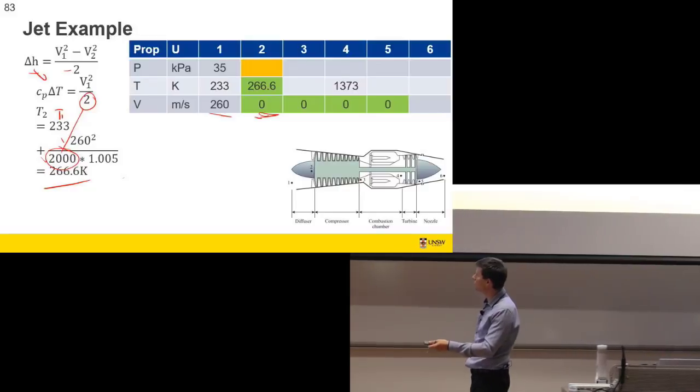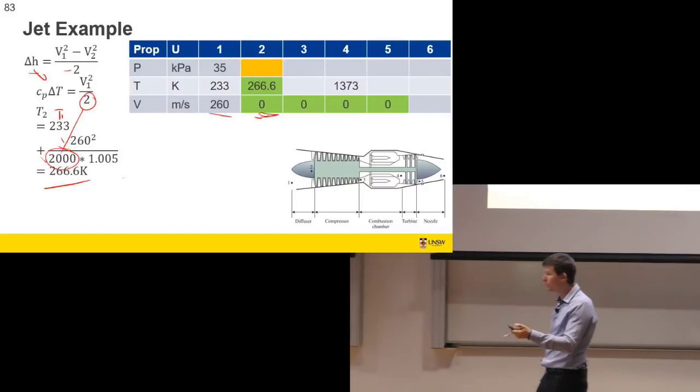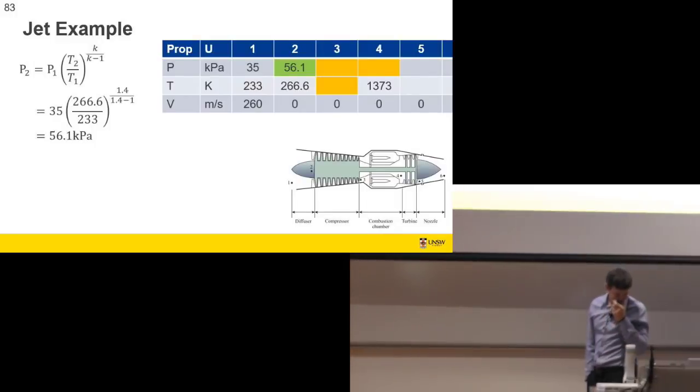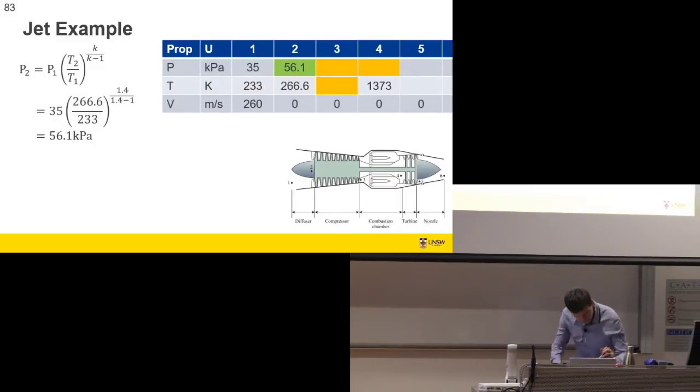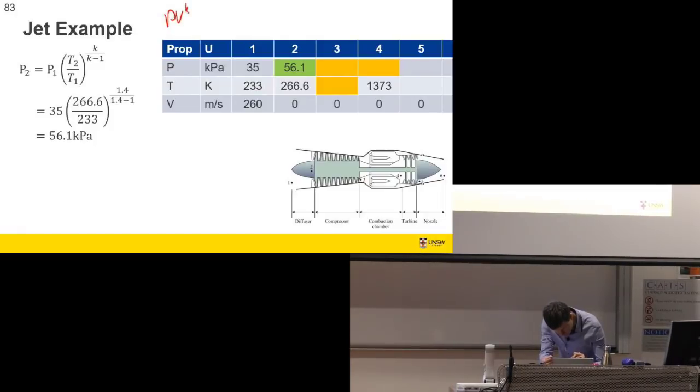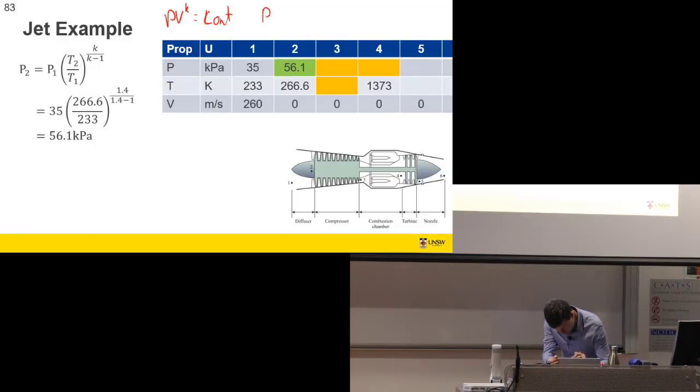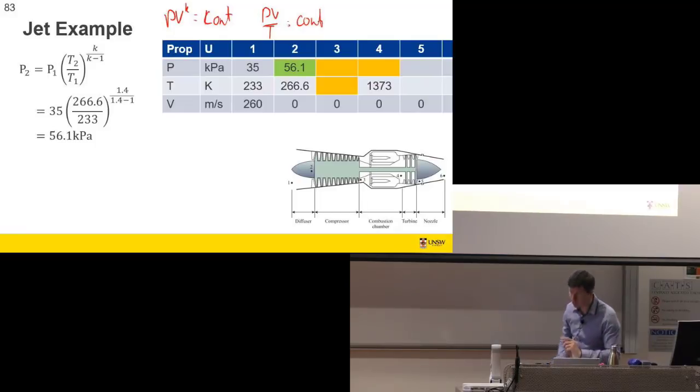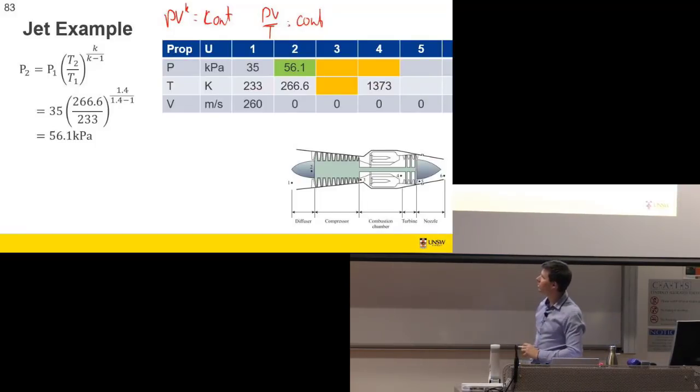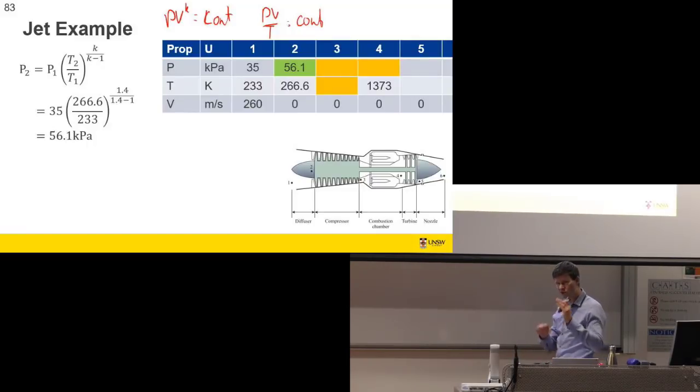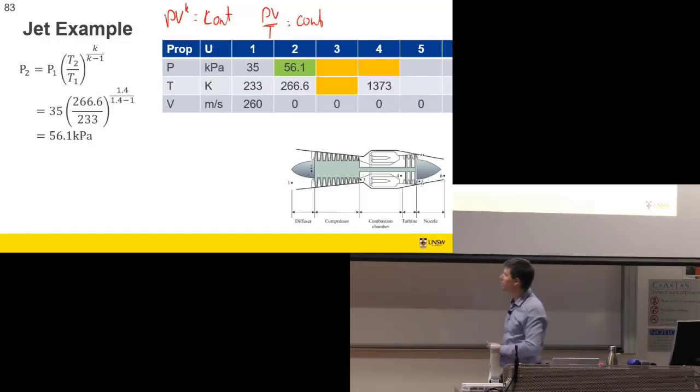The velocity throughout the system with respect to the system itself is zero because we're going to neglect any kinetic energies in the system. And we know that through a diffuser, our change in enthalpy is equal to our change in kinetic energies. We can calculate our temperature of state point two. Now we've got our temperature of state point two. We can calculate our pressure of state point two using this relationship. So this relationship is derived from PV to the power of K is constant and PV over T is constant. Different constants.